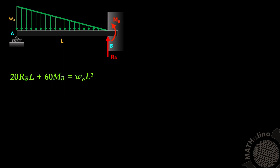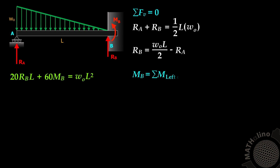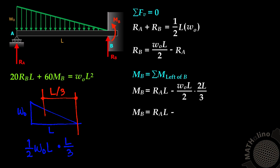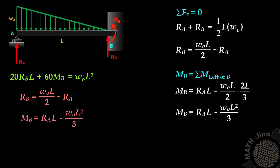We have an equation with two unknowns, RB and MB. To reduce to one unknown, we express RB and MB in terms of RA from the load diagram. Summation of vertical forces: RA plus RB equals one-half L times W-naught, so RB equals W-naught L over 2 minus RA. And MB equals RA times L minus W-naught L over 2 times two-thirds of L, giving MB equals RA·L minus W-naught L squared over 3.